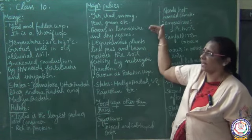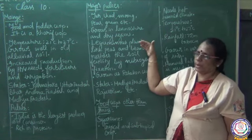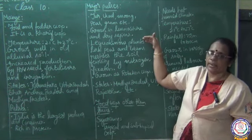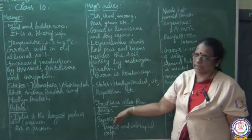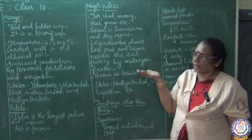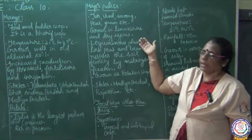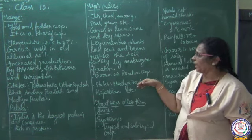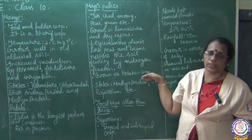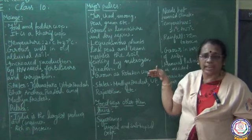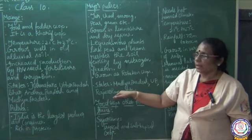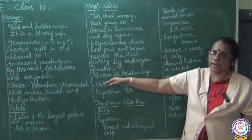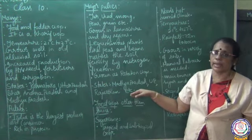Leguminous plants like peas and beans fix nitrogen in the soil, enriching soil fertility. Pulses can also be grown as a rotation crop, cultivated alongside other crops. The important pulse producing states are Madhya Pradesh, Uttar Pradesh, Rajasthan, etc.